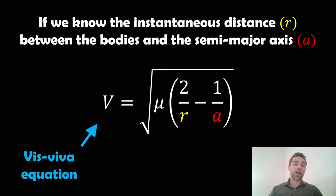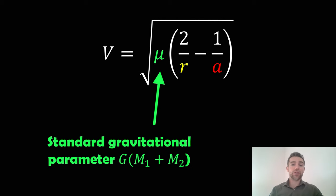We would use this Vis-Viva equation to calculate the orbital velocity at that point. We have an additional variable or term, which is mu. Mu here is the standard gravitational parameter, which is essentially both masses added together times G.